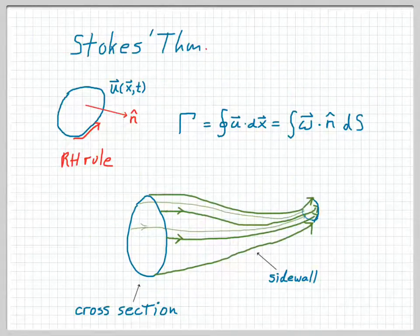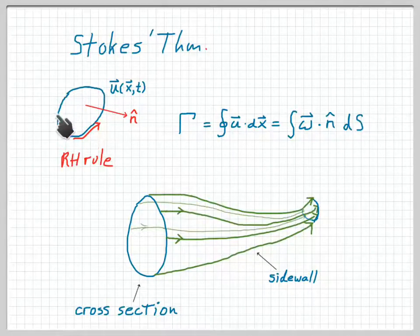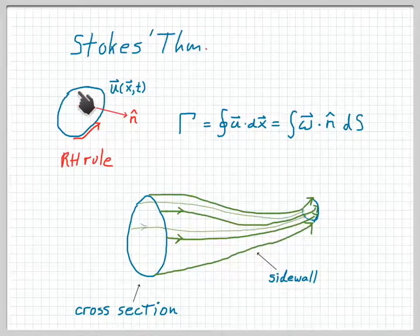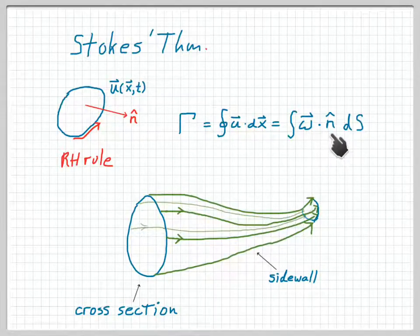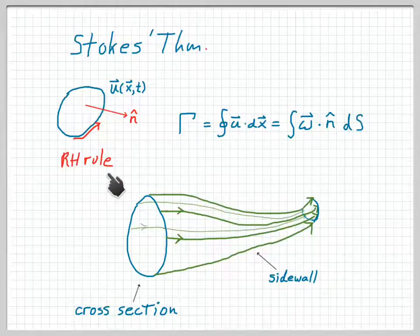Helmholtz's second theorem has to do with the circulation around a vortex filament. The circulation is defined as a line integral of the velocity field u around a closed circuit, shown in blue here. Stokes' theorem tells us that we can also represent the circulation as an area integral of the vorticity over any surface bounded by our closed circuit — specifically, the vorticity dotted with the outward pointing unit normal n-hat, determined by the right-hand rule.